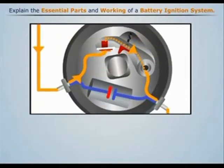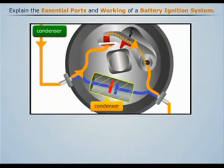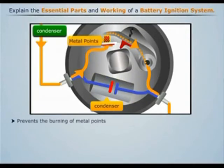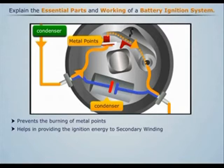A condenser is connected in parallel with the contact breaker to prevent the burning of the metal points, and also helps in providing the ignition energy to the secondary winding.